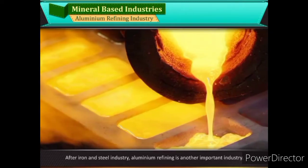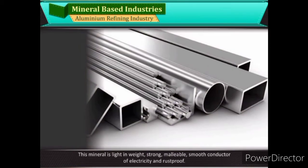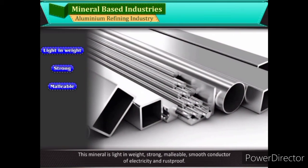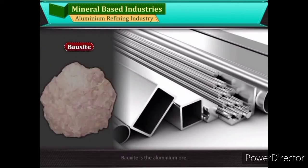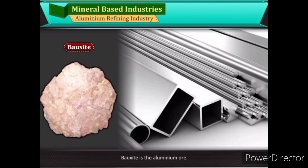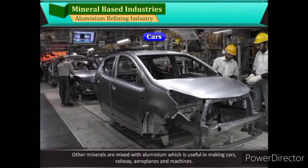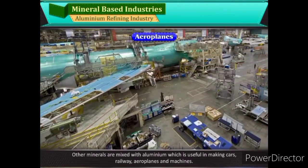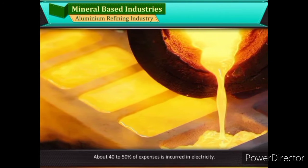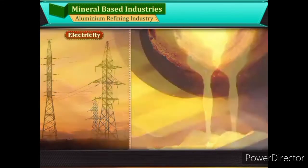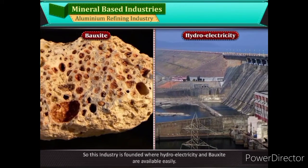After iron and steel industry, aluminium refining is another important industry. This mineral is light in weight, strong, malleable, a smooth conductor of electricity, and rust-proof. Bauxite is the aluminium ore. Aluminium is mixed with other minerals and is useful in making cars, railways, aeroplanes, and machines. About 40–50% of expenses is incurred in electricity, so this industry is founded where hydro-electricity and bauxite are available easily.